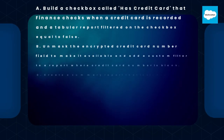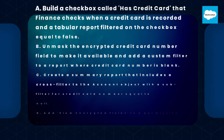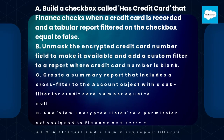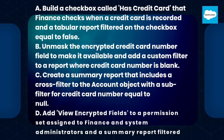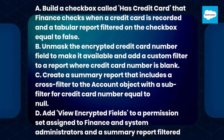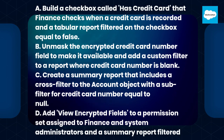A. Build a checkbox called HasCreditCard that finance checks when a credit card is recorded and a tabular report filtered on the checkbox equal to false. B. Unmask the encrypted credit card number field to make it available and add a custom filter to a report where credit card number is blank.